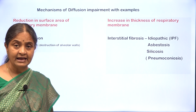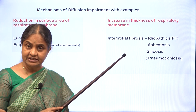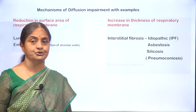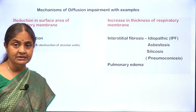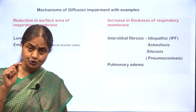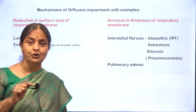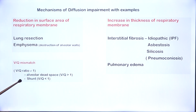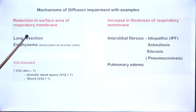We have already seen that even if the interstitium is thickened, oxygen diffusion would be affected but not carbon dioxide diffusion. Pulmonary edema is an example of an acute condition where gases have to diffuse through a layer of fluid to reach the other side. VQ mismatch, or ventilation-perfusion mismatch, is another condition which I would like to club along with reduction in surface area of the respiratory membrane. We will discuss it in detail later.